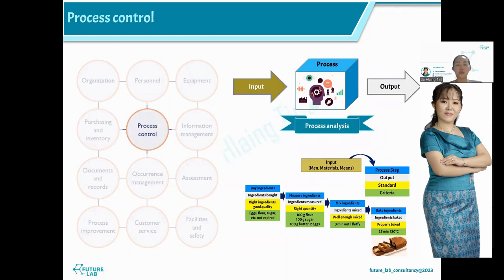Process control includes process validation, risk assessment, and process analysis. We have to work on process analysis and find what will happen at each process step — input, process step, and output.